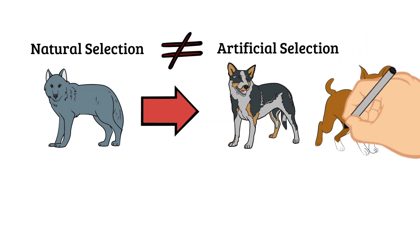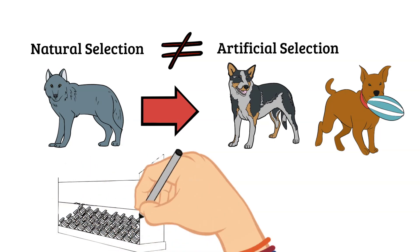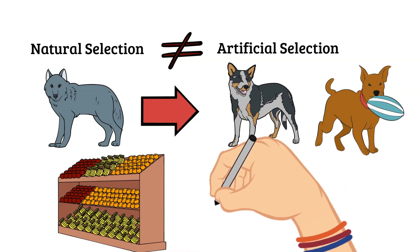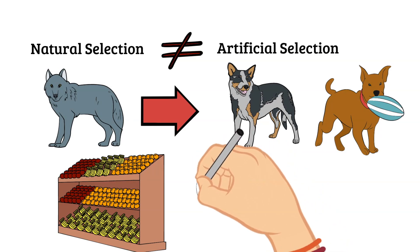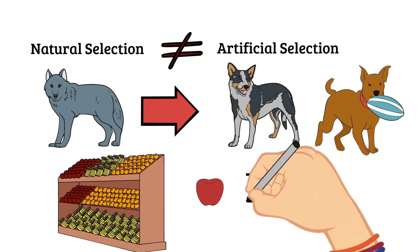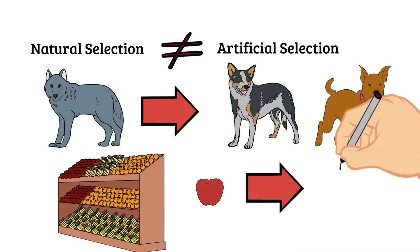Another example of this would be in fruits and vegetables. Across the years, many fruits and vegetables have been changed through this process of artificial selection where people have chosen to make fruits have bigger fruit pieces or smaller seeds.